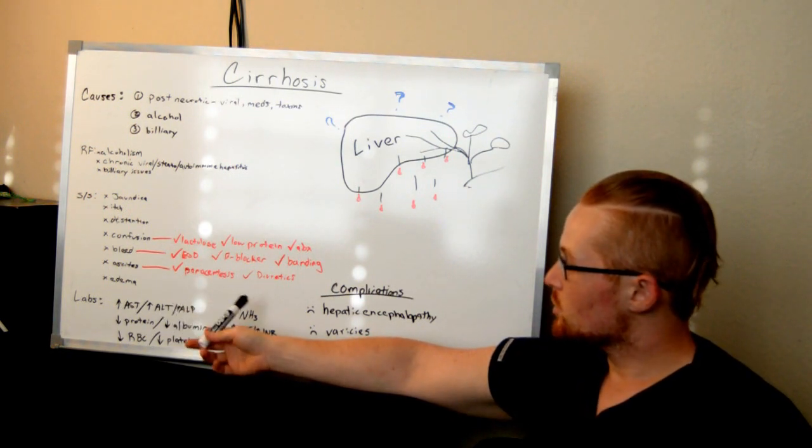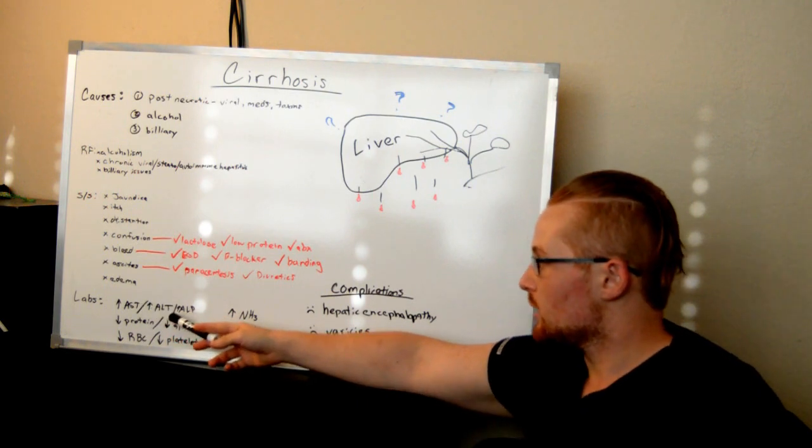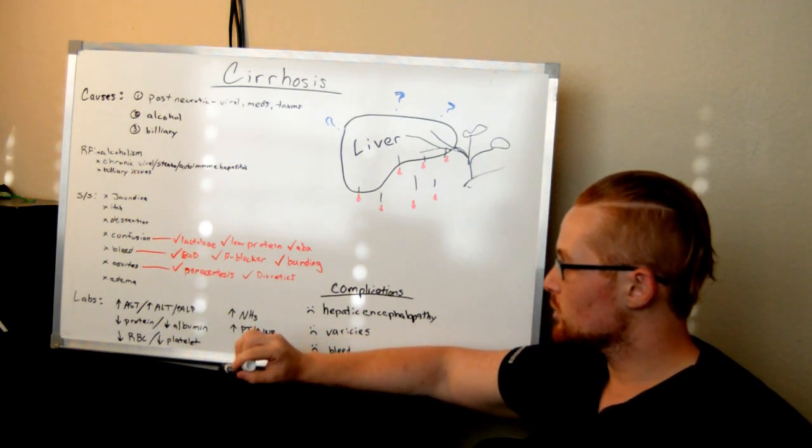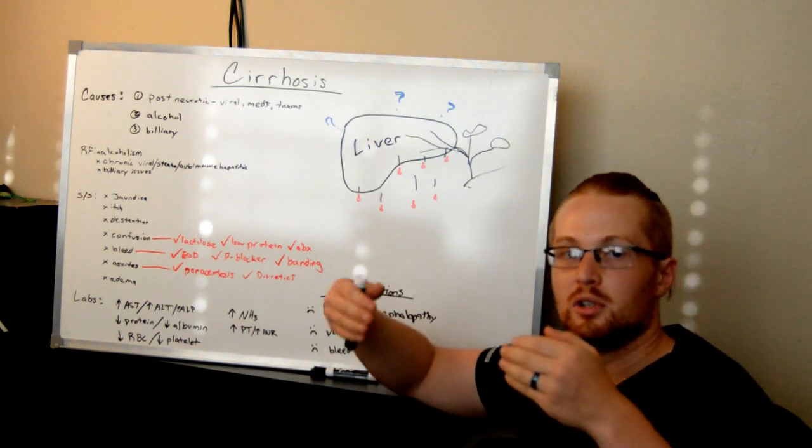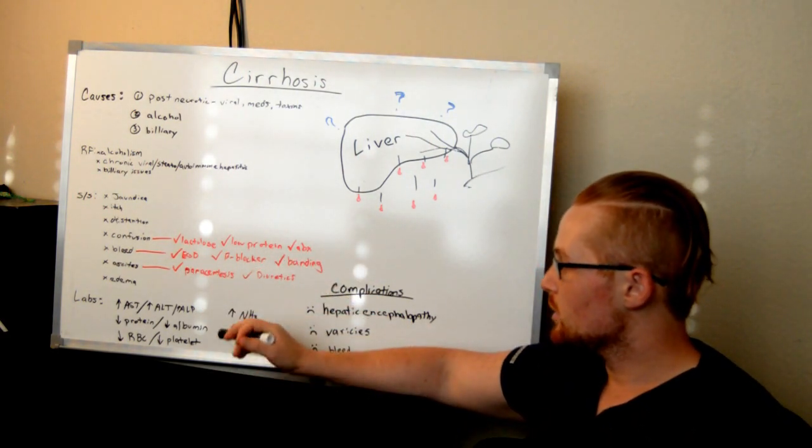Some labs you can do to help diagnose this: you can see elevated liver enzymes through AST, ALT, and ALP. You may see increased ammonia levels in the blood. PT and INR, which have to do with the body's ability to clot the blood, if elevated, it's because it's not able to produce those clotting factors.